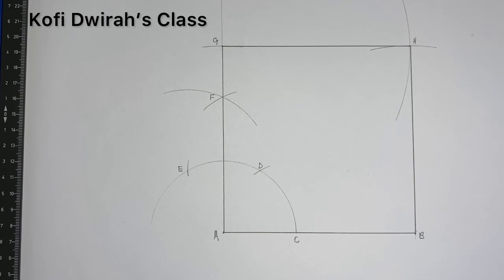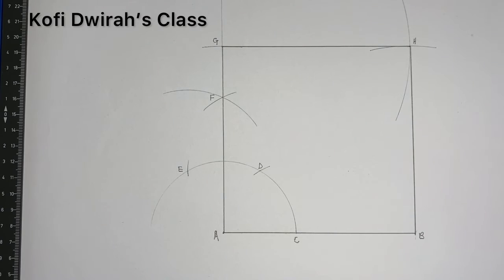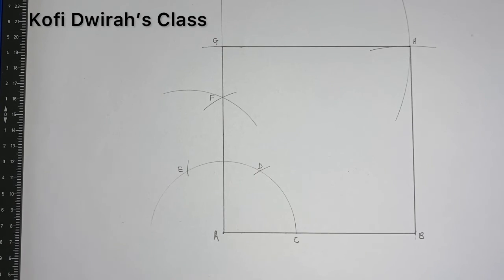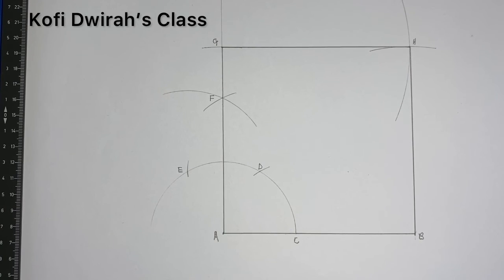So, this is how to construct a square using the compass. It's very simple. Take your drawing board, your T-square, your set squares and try to draw this. It's very simple. Leave a comment below if you have any problem or a question — just leave all your questions in the comment section and I will answer all your questions.